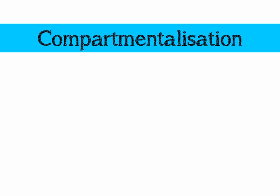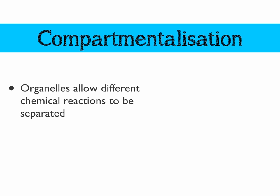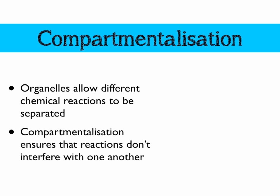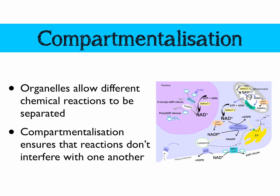First of all, I want to talk about compartmentalisation. This is the idea that the reason we have organelles is to allow different chemical reactions to occur and to be separated. The advantage to that is that it makes sure reactions don't interfere with one another. Here's a simplified diagram of just some of the reactions going on in the different organelles — certain things would interfere with other reactions, so we'd like to keep them separate.